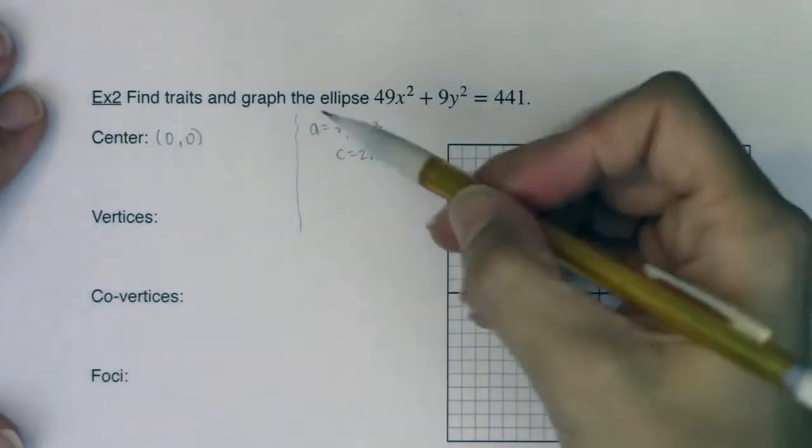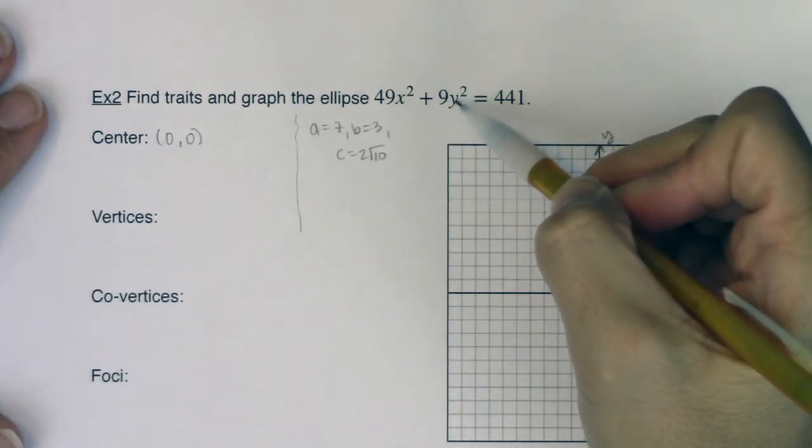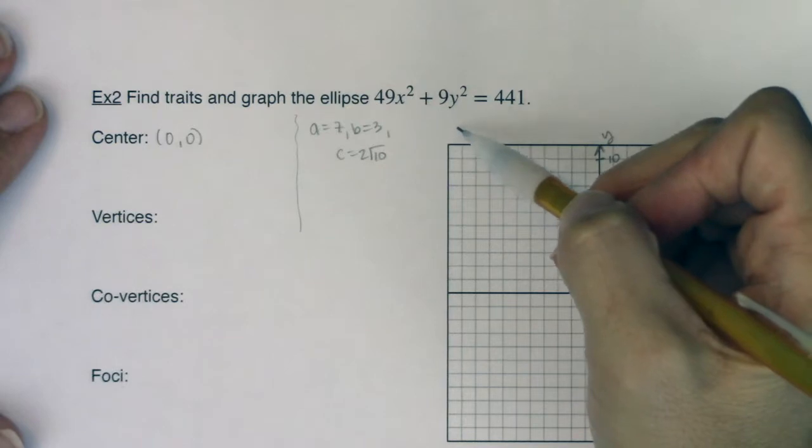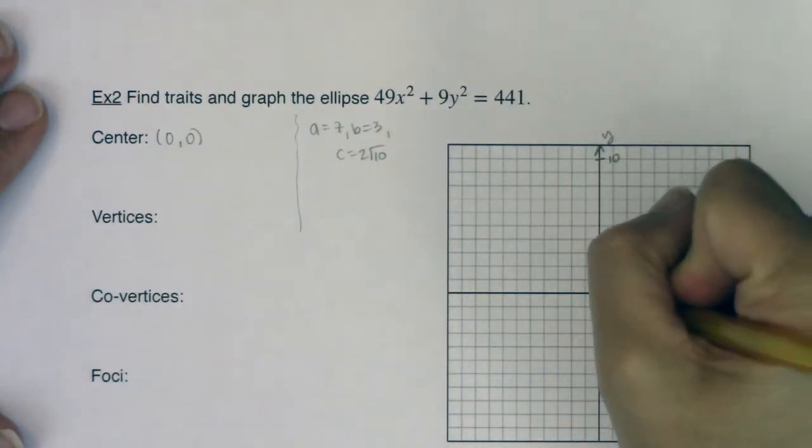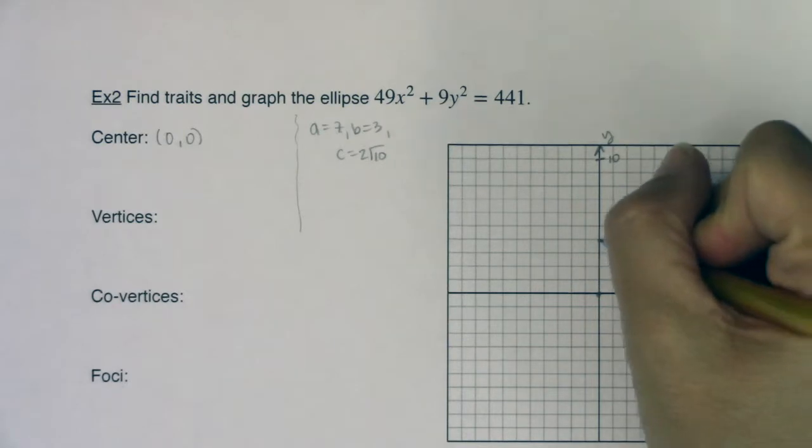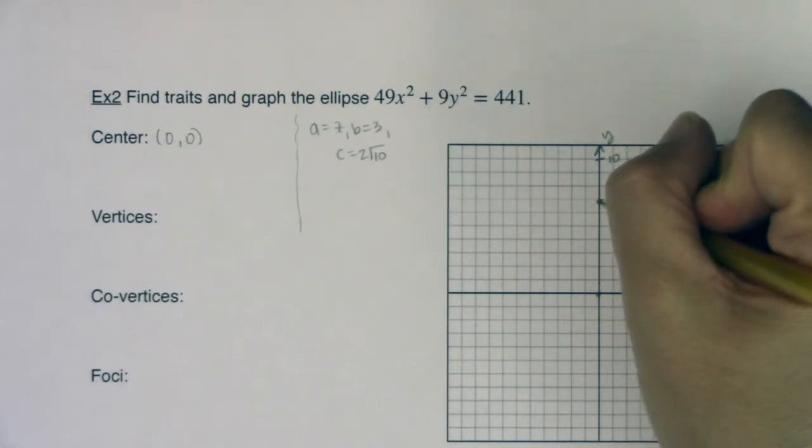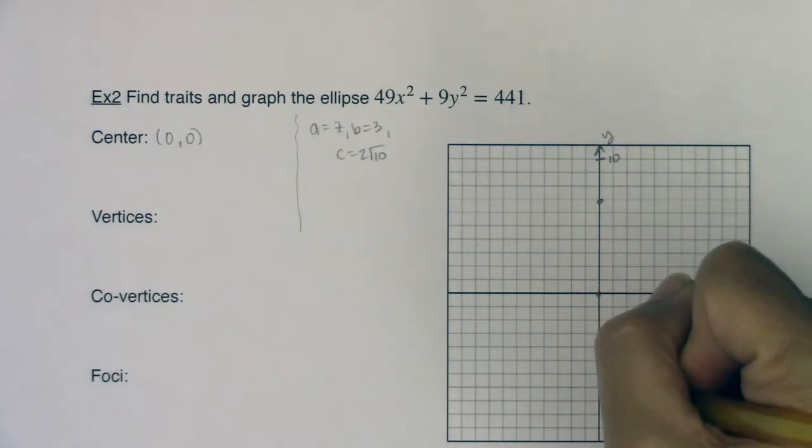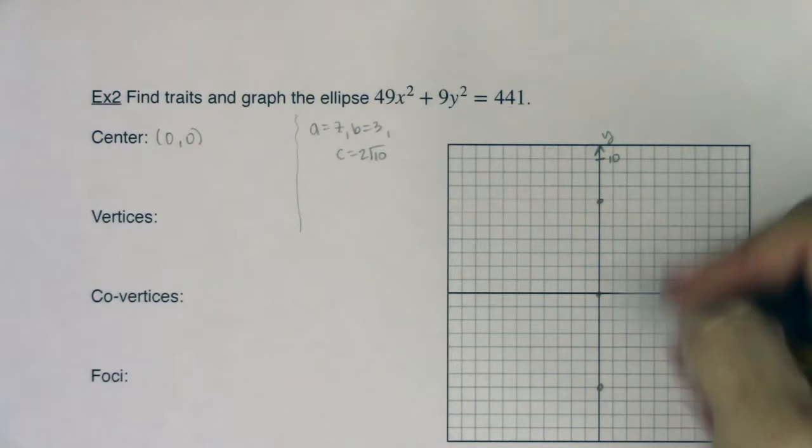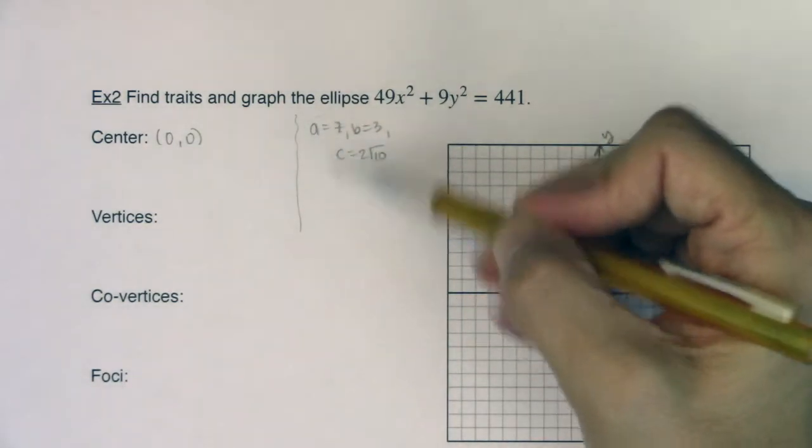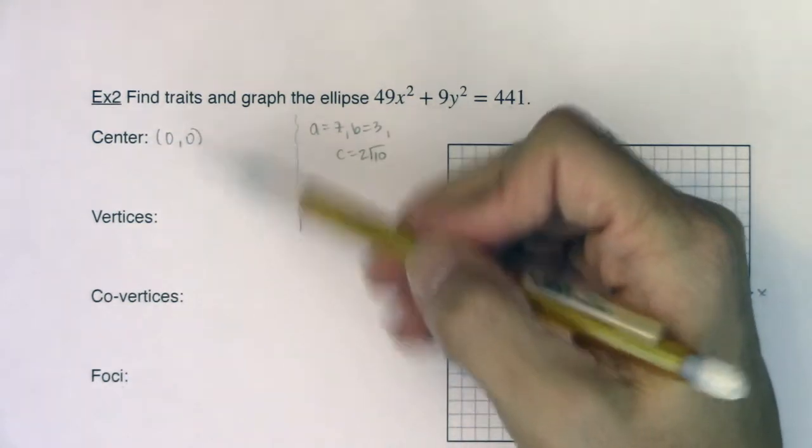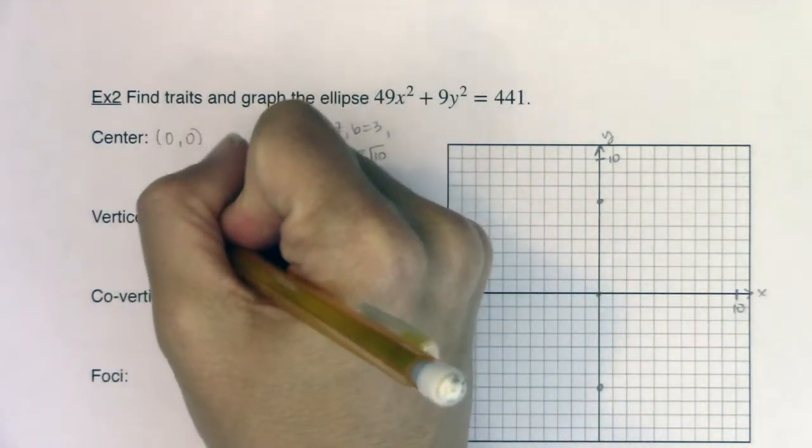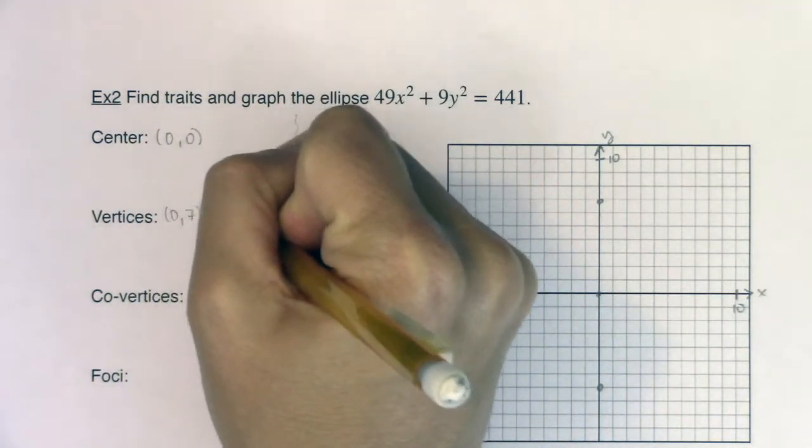Since a was 7 and it was associated with the y variable, because we ultimately had y squared over 49, that was the larger of the two numbers. So since a was with the y variable, from my center of the origin, I'm going to move up and down 7 units. So let me go 2, 4, 6, 7, and I will go down 7 units, 2, 4, 6, 7. Those are going to be my vertices. Now, if a is 7 and I'm moving up and down, does up and down motion affect your x coordinate or your y coordinate? Well, up and down motion affects your y coordinate. So my vertices are going to be (0, 7) and then (0, -7).